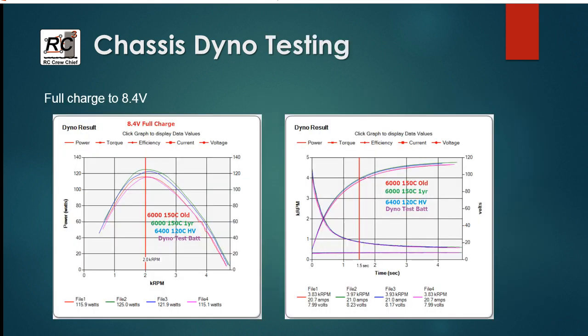So first off we've got the 8.4, and what you can see here is the four different batteries. The dyno test battery is the bottom one here, it's the purple line. The two-year-old 6000 150C is the line which is just slightly above it. The best one is the 6000 one-year-old. These batteries are probably going to go into retirement here fairly shortly as their internal resistance is starting to increase. And the blue line is the high voltage pack charged to 8.4.